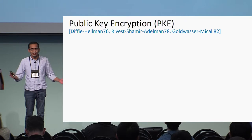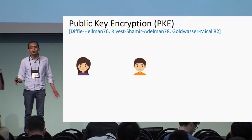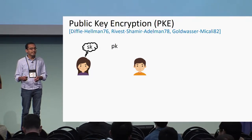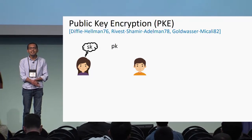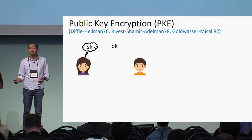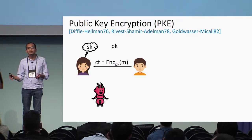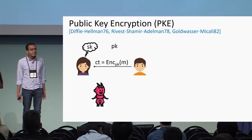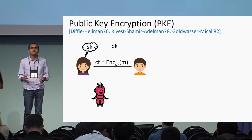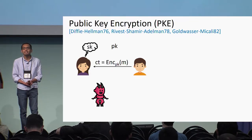So public key encryption — we all know and love public key encryption. It allows two people who have never met each other to communicate securely. Alice holds a secret key, there's a public key which is up in the sky. It allows Bob to send a message encrypted to Alice such that any eavesdropper Eve who looks at this conversation cannot understand what the message is. Public key encryption has been around for a while and it's extremely useful.